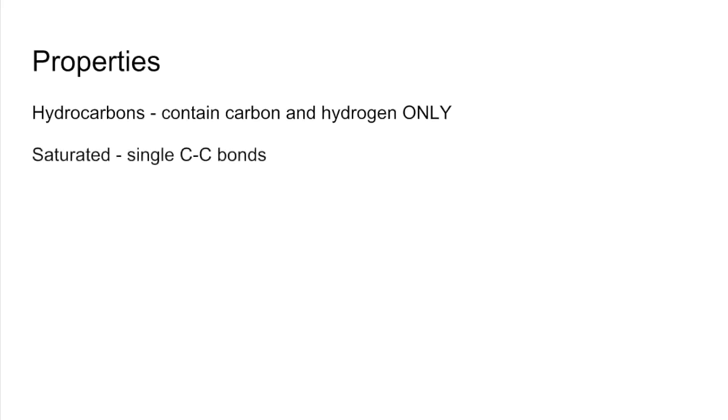Quick revision video on alkanes. We'll start with the basic properties. Alkanes are hydrocarbons, so they contain carbon and hydrogen atoms only. They are saturated, so they've got single carbon-carbon bonds.